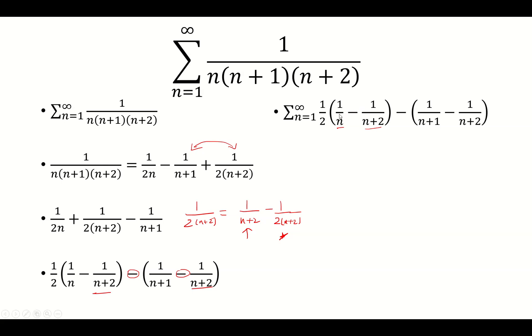So for example, when n is 1, we get 1 minus 1 third. n is 2 is 1 half minus 1 fourth. But then when n is 3, we have 1 third minus 1 fifth. And then 1 third gets canceled out by the prior 1 third over here.